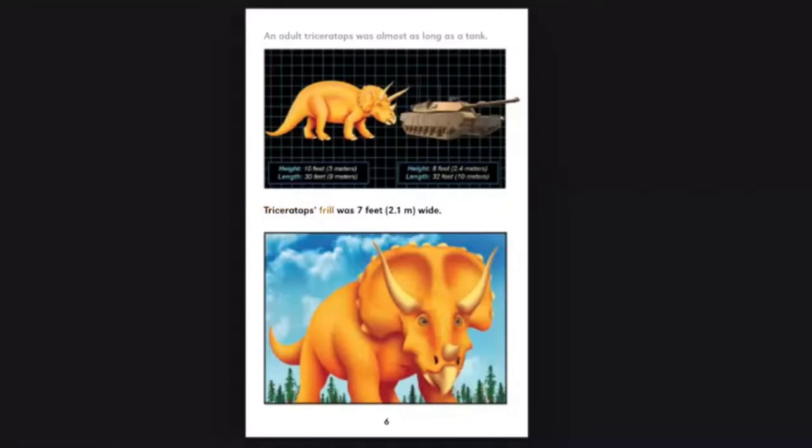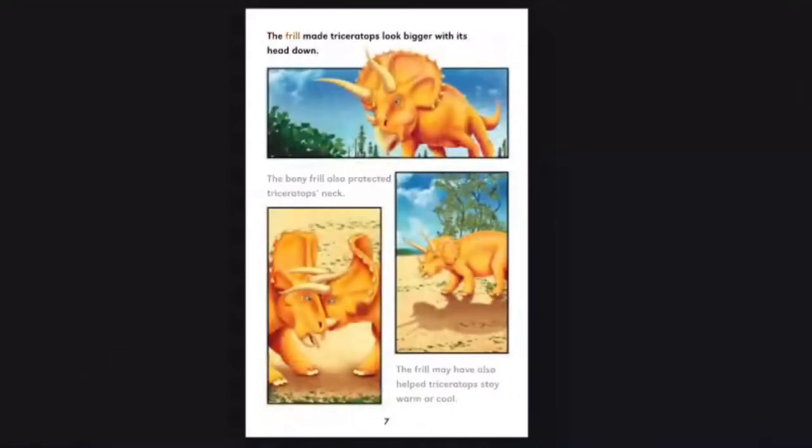Triceratops' frill was 7 feet, 2.1 meters wide. The frill made Triceratops look bigger with its head down. The bony frill also protected Triceratops' neck. The frill may have also helped Triceratops stay warm or cool.